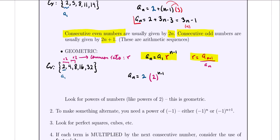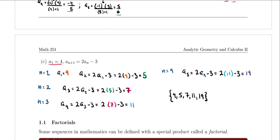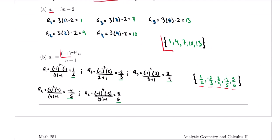A couple of hints for geometric sequences: look for powers of 2 or powers of 3, as that indicates a geometric sequence. Also, if the sequence has alternating signs, you'll need a power of negative 1 — either to the n or n plus 1 power, depending on the sign of your first term. We saw this in the previous video, where alternating signs told us we needed negative 1 raised to some power.